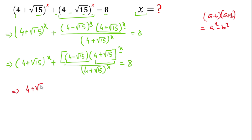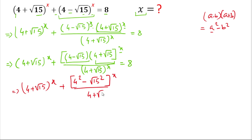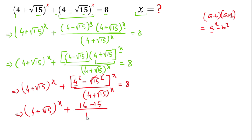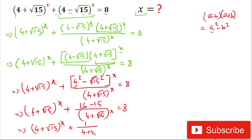So we write (4 + √15)^x plus, applying a² − b²: 4² − (√15)² to the power x, divided by (4 + √15)^x, equals 8. The square and square root cancel, giving us (4 + √15)^x + (16 − 15) / (4 + √15)^x = 8. Since 16 − 15 = 1, this simplifies to (4 + √15)^x + 1/(4 + √15)^x = 8.